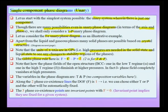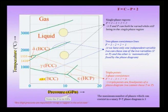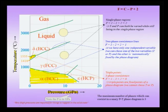An important thing to note when we see the diagram is that the open-structure BCC in the low-temperature regime, labeled alpha, and another BCC structure in the high-temperature regime, labeled delta, both diminish at high pressures. The phase stability regime of BCC here — the low-temperature form called alpha and the high-temperature form called delta — both these phase fields diminish as you go to higher pressures.